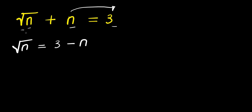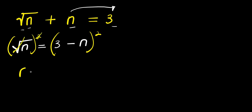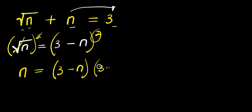Right here I can decide to take the squares of both parts of this equation to eliminate the square root. I raise both sides to the power of 2. The square root eliminates and I have n, and this equals 3 minus n times 3 minus n.